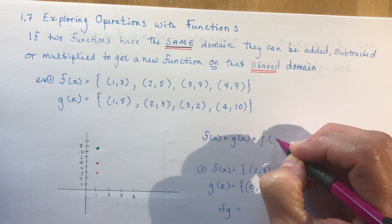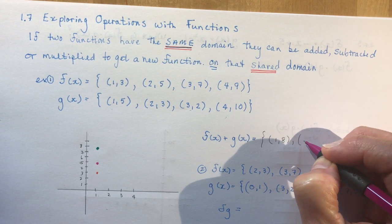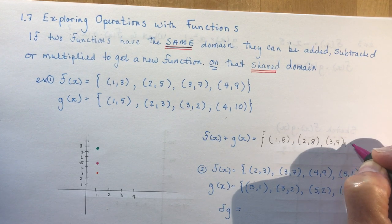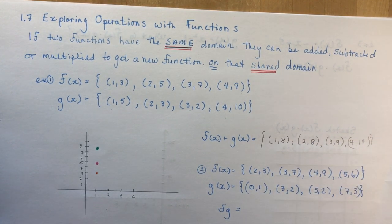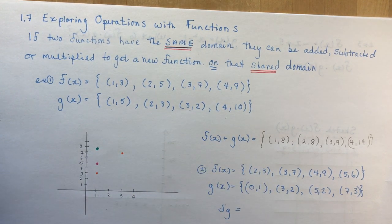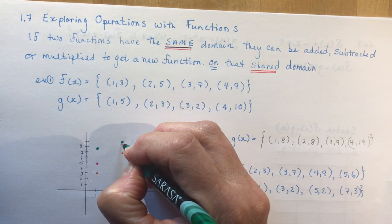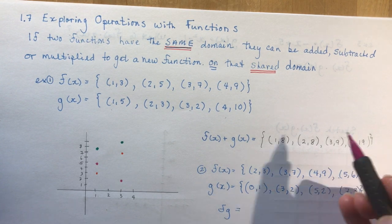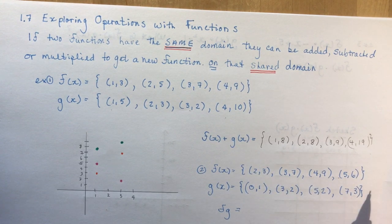Writing it as a set of coordinates, I add the y-values for each shared x: giving (2, 8), (3, 9), and (4, 19). For x = 3: f gives 7 and g gives 2, so the new point is (3, 9). You can also multiply or subtract functions, but dividing is not required here.